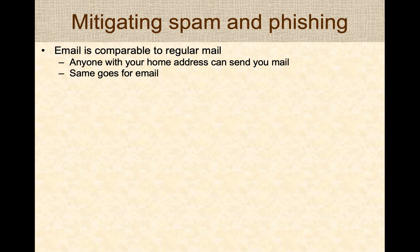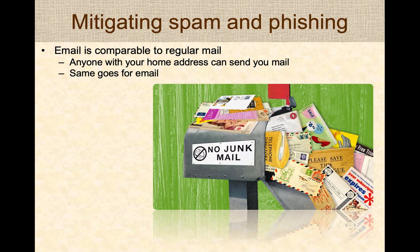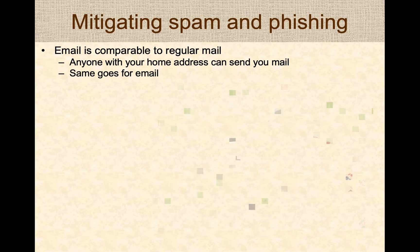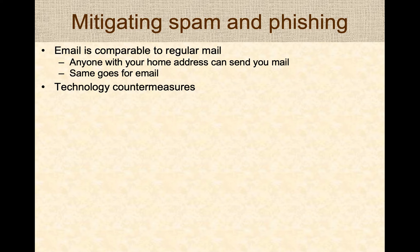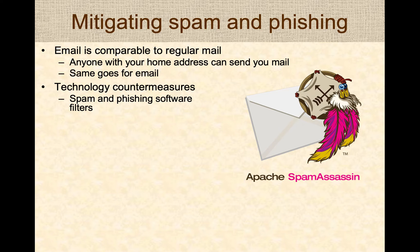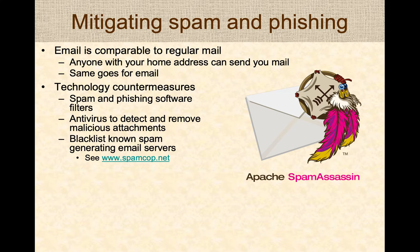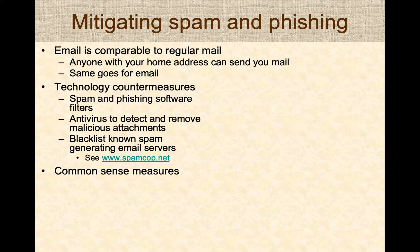Now let's look at how to mitigate spam and phishing. Email is comparable to regular mail — just as anyone with your home address can send you junk mail, anyone with your email address can send you email. We have technology countermeasures to reduce spam and phishing: spam filters and phishing software mark suspicious emails, antivirus software detects and removes malicious attachments to prevent malware installation, and blacklists maintained by receiving email servers block emails from known spam servers.